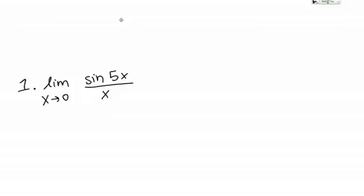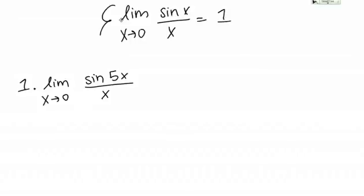Let's do some examples involving special trig limits. The fact we're going to use to actually solve these examples is the following limit: the limit as X goes to 0 of sine of X over X equals 1. This is a really useful limit to know, and we'll see how it can be used to solve a variety of limit problems.